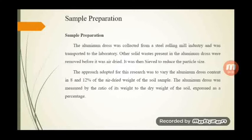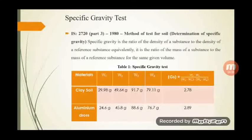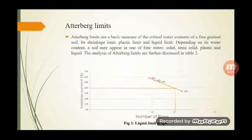Weight batching is used throughout the project to prepare the samples. With the help of a pycnometer, we found the specific gravity of the substances by adding kerosene into it. The clay has a specific gravity of 2.78 and the aluminum dross has a specific gravity of 2.89. To study the consistency of clay and to identify its limits, we did the Atterberg limit test to find the liquid zone and plastic zone of the clay soil.